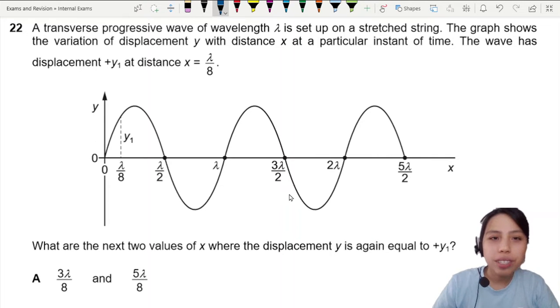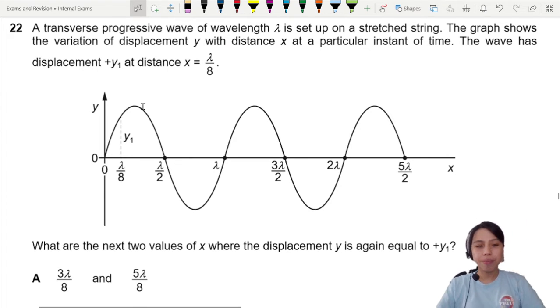A transverse progressive wave of wavelength λ is set up on a stretched spring. The graph shows displacement against distance. What are the next two values where the displacement is same as plus y1?